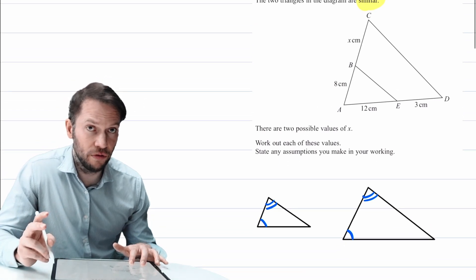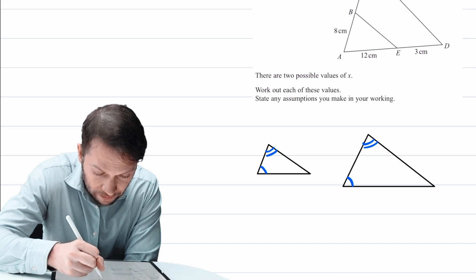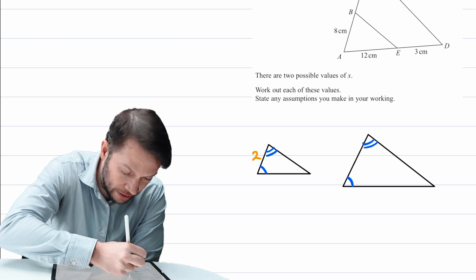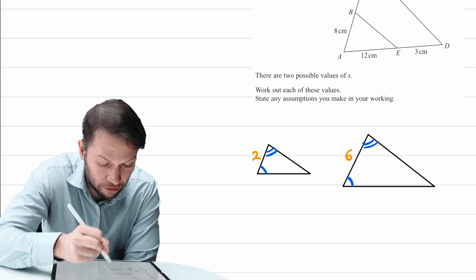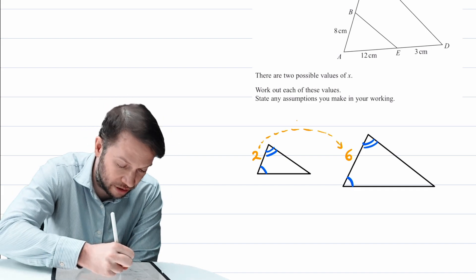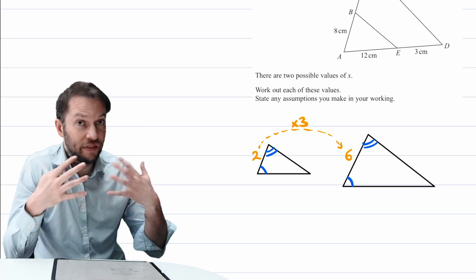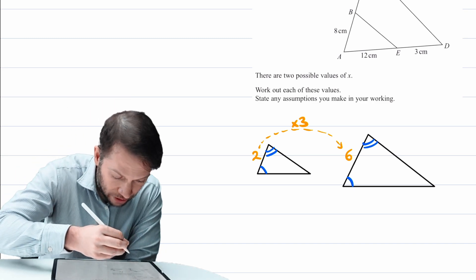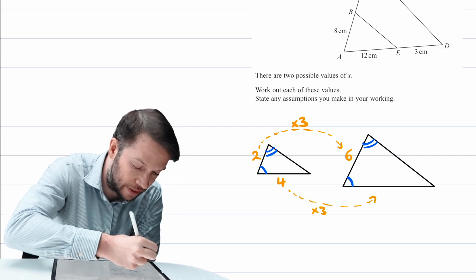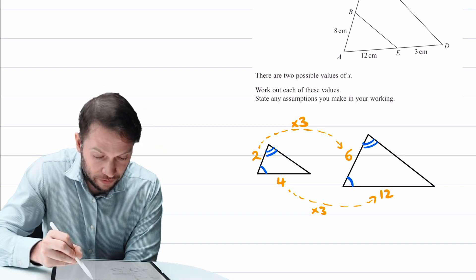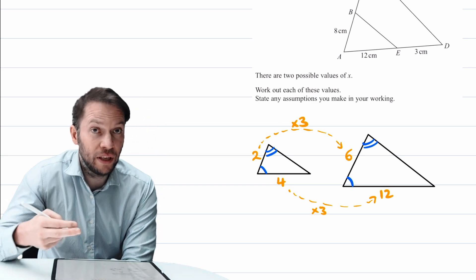Let's think about how we would usually tackle similar triangles to work out what x might be. If we have these two triangles and we had lengths of, say, 2 and 6, then because this side of the triangle is comparable to this side of the other triangle, we can look at the scale factor — how many times bigger is this triangle getting? Well, it's three times bigger, and the way we got that scale factor is just 6 divided by 2. With similar triangles, all the lengths scale in the same way. So if I had a bottom length of 4, that scales by the same factor of 3, giving you 12.